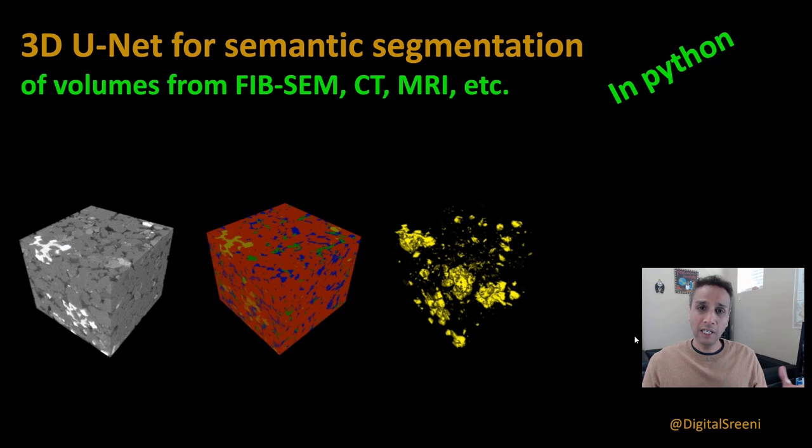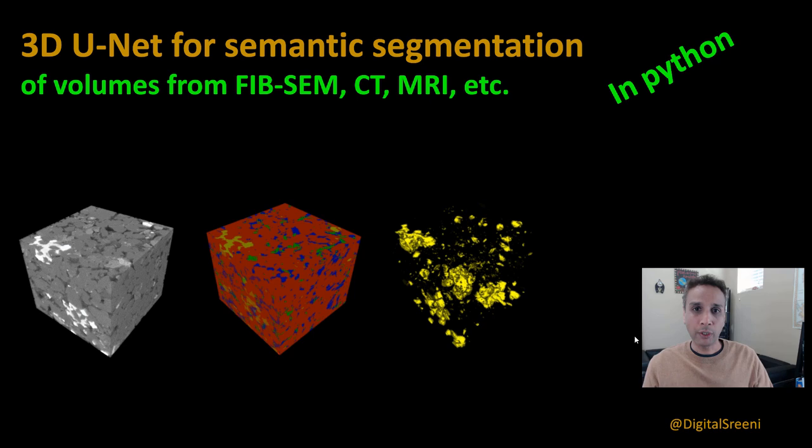Along the way, I'll also show you how you can open these 3D images for free, online or locally. Let's get a quick understanding of what 3D U-Net is and then jump into the code. For code, I'm going to use Colab because 3D U-Net does require a GPU. Colab is much better and probably most of you have access to it.